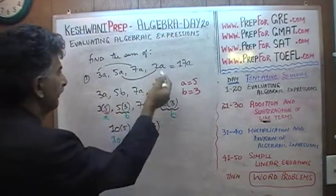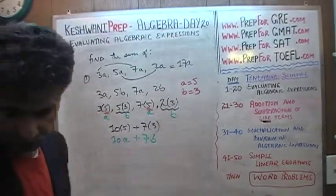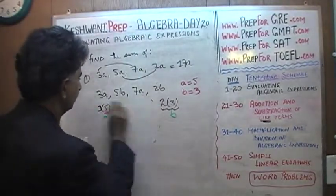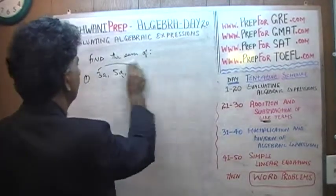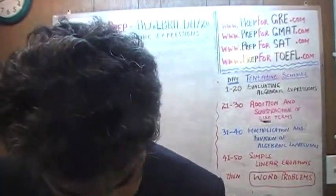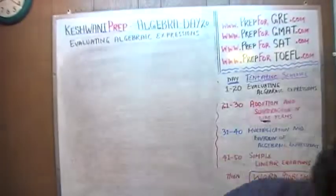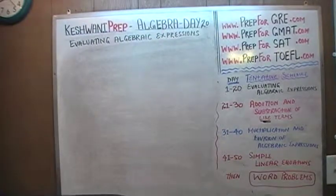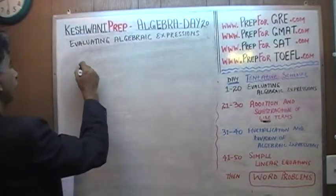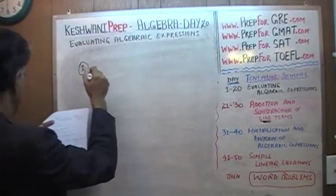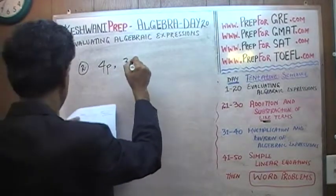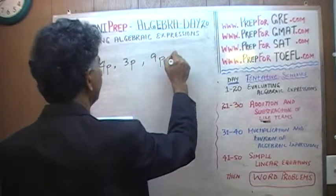In the first one it was very simple because they were all a's. Let's do number 2: 4p, 3p, 9p and 10p.